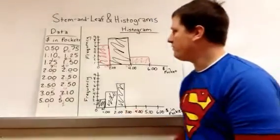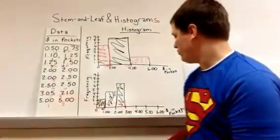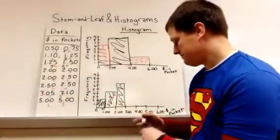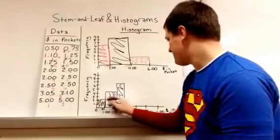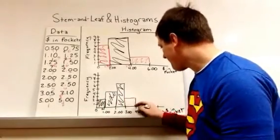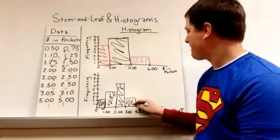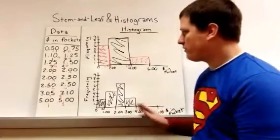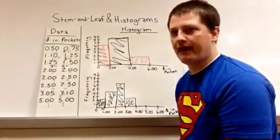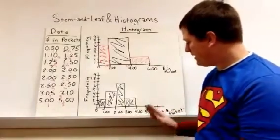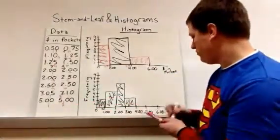Then we have from three to four. One, two there. We now have from four to five. Well, there's nothing in the four to five range. So we're going to leave that one empty. Then we have from five to six, which again is two.